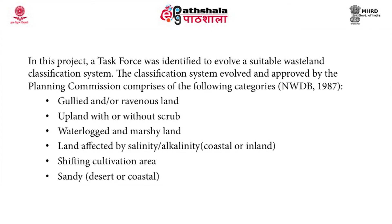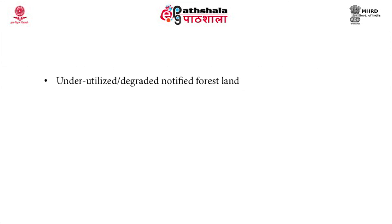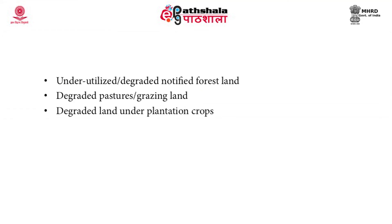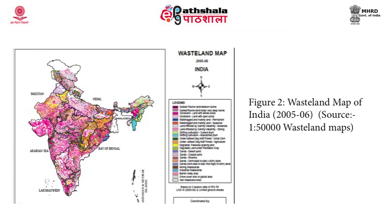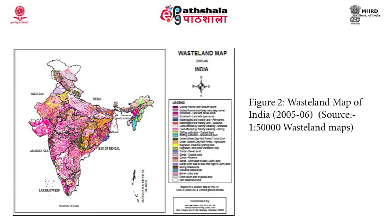The 13 wasteland categories comprise: gullied and ravenous lands, uplands with or without scrub, waterlogged and marshy land, land affected by salinity and alkalinity including coastal or inland areas, shifting cultivation areas, sandy areas that may be desert or coastal, mining or industrial wastelands, underutilized or degraded notified forest land, degraded pastures or grazing land, degraded land under plantation crops, barren rocky or stony waste or sheet rock areas, steep sloping areas, and snow covered or glacial areas. This figure shows the wasteland map of India prepared on a scale of 1 to 50,000 by the National Remote Sensing Centre under the Indian Space Research Organization, showing all 13 classes with their subdivisions.